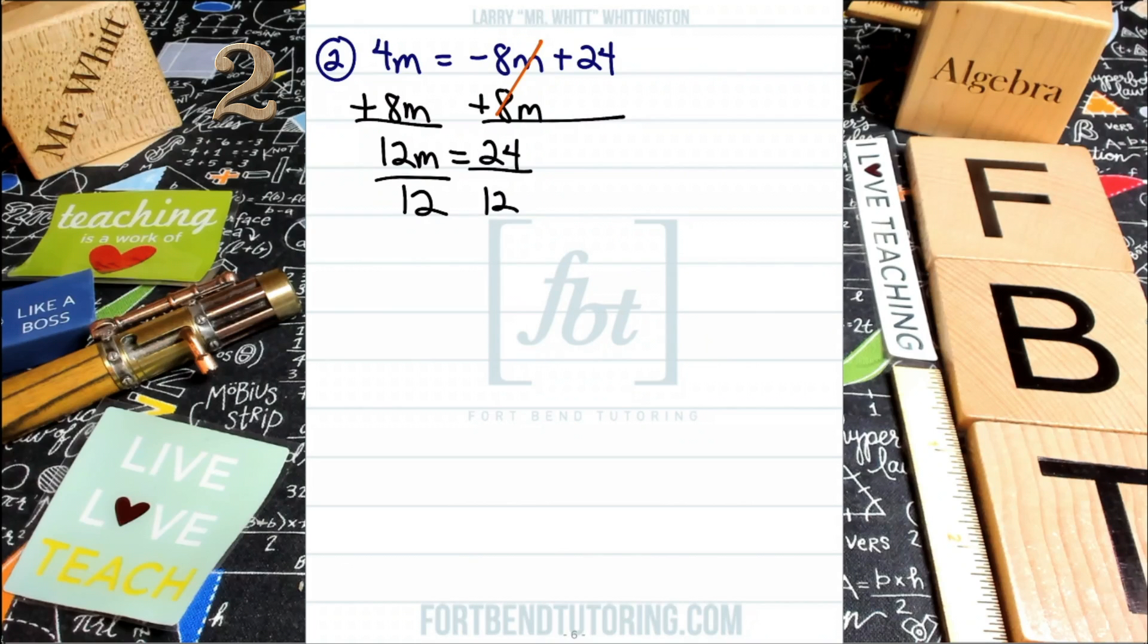Then I'll be simplifying. On the left side, 12 divided by 12 is 1m, so that's what I'm bringing down. On the right side of our equation, you have 24 divided by 12. It just so happens that 12 goes into 24 twice. Go ahead and bring down a 2.